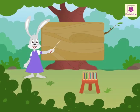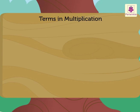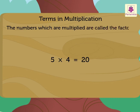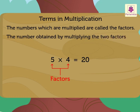Before we start, let us revise the terms used in multiplication and division. Look at the example. 5 into 4 is equal to 20. Here, the numbers which are multiplied are called the factors. So, in this example, the numbers 5 and 4 are the factors. The number obtained by multiplying the two factors is called the product and number 20 is the product here.